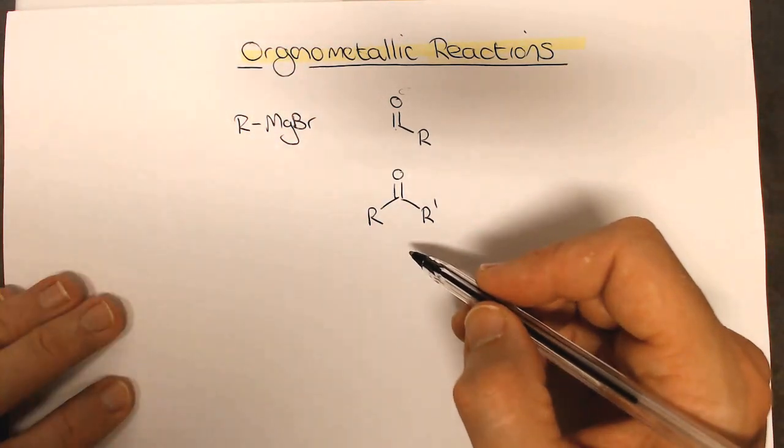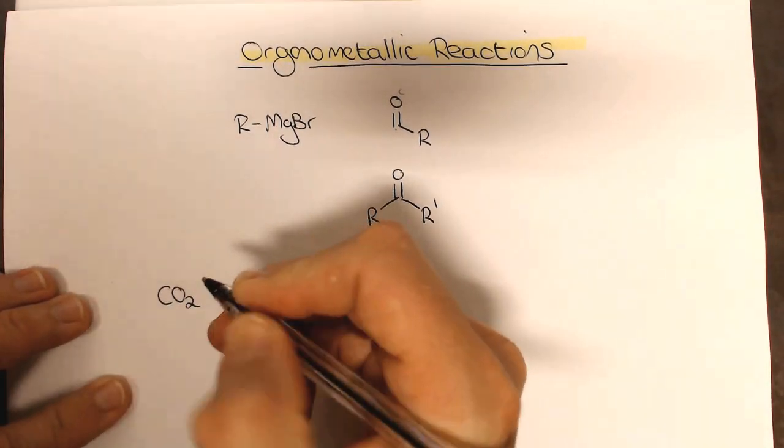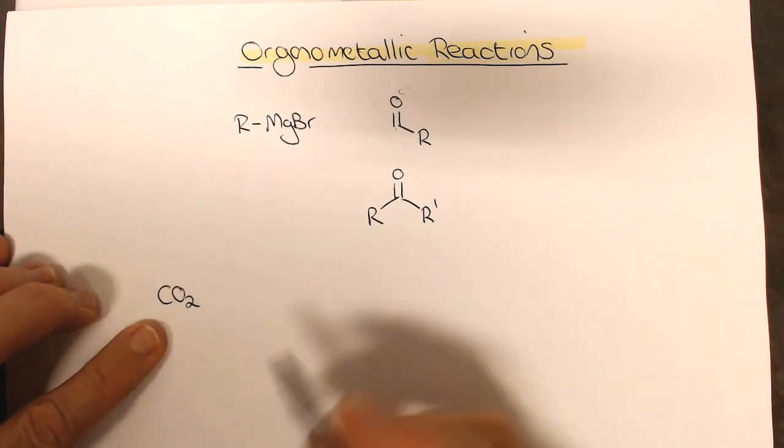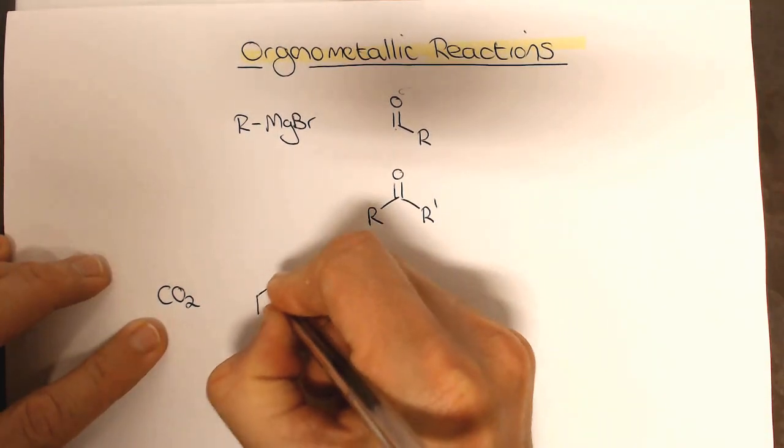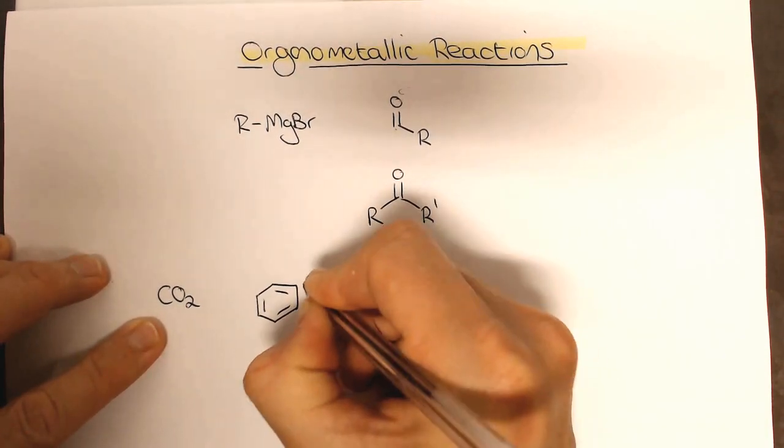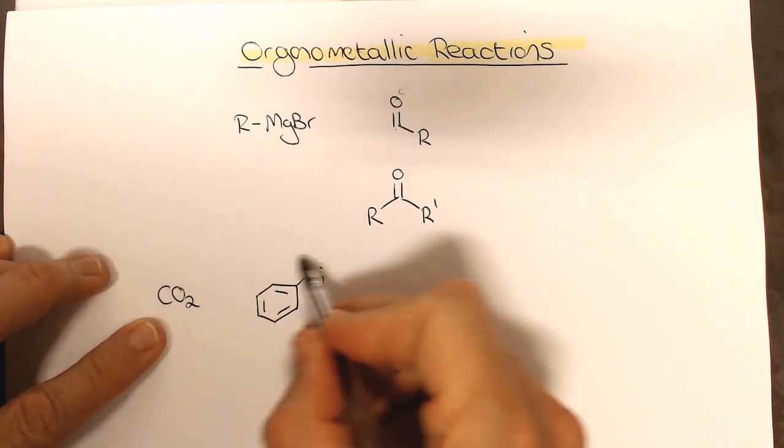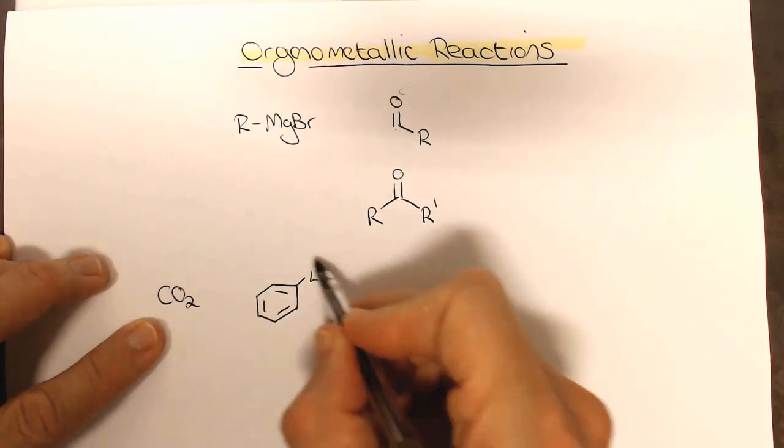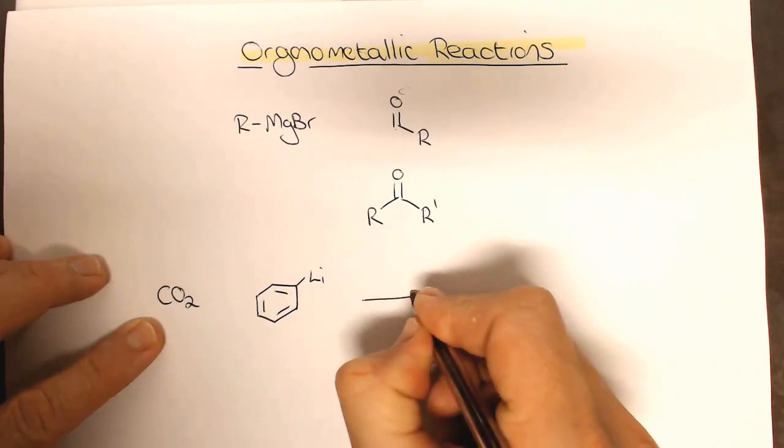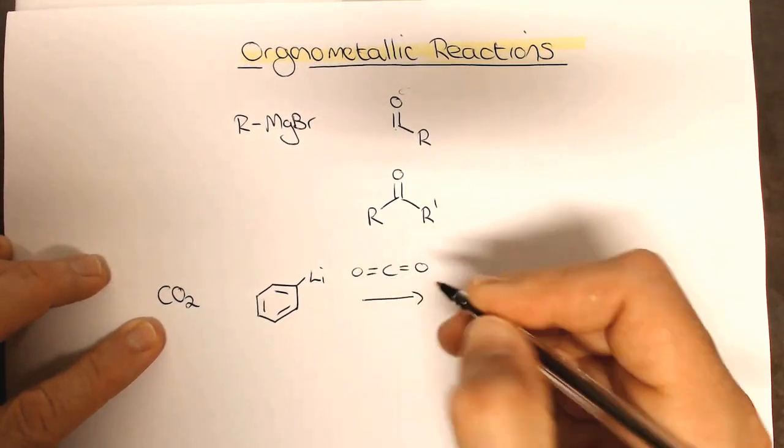And the one example that we're going to, the first example I want to look at is CO2. This is a very useful electrophile, certainly one that we've used in our research to make functionalized molecules. When we take our, and I'm going to use the organolithium now just as a variation, if we treat an organometallic reagent, such as this one, if we treat it with CO2, the carbon dioxide is a good electrophile.